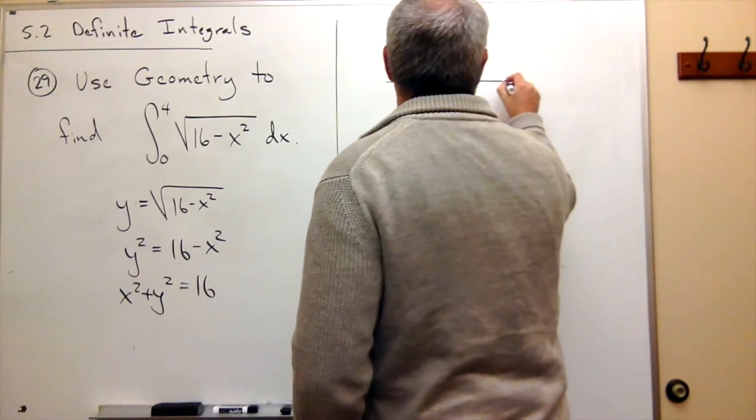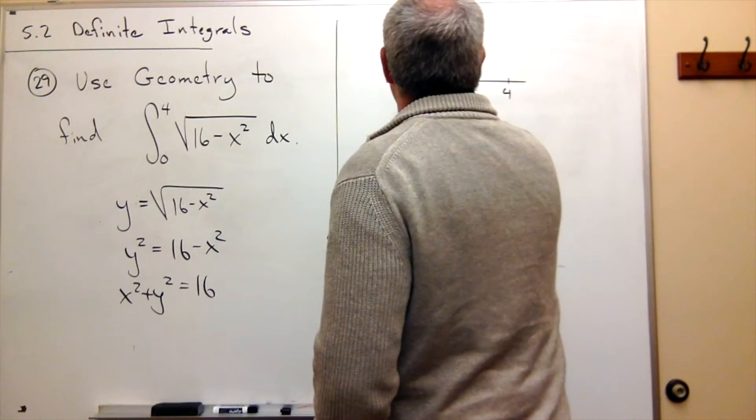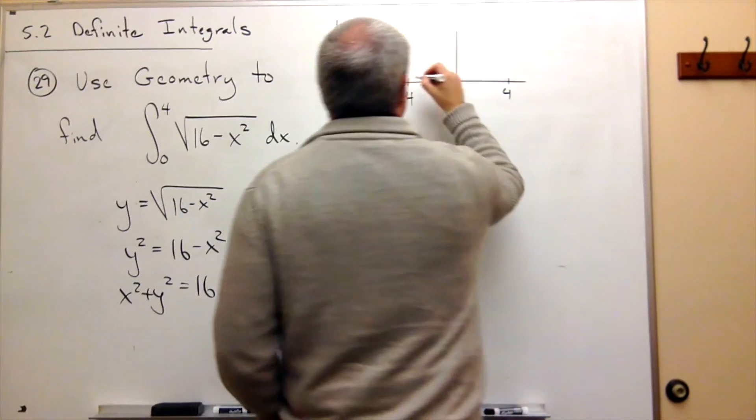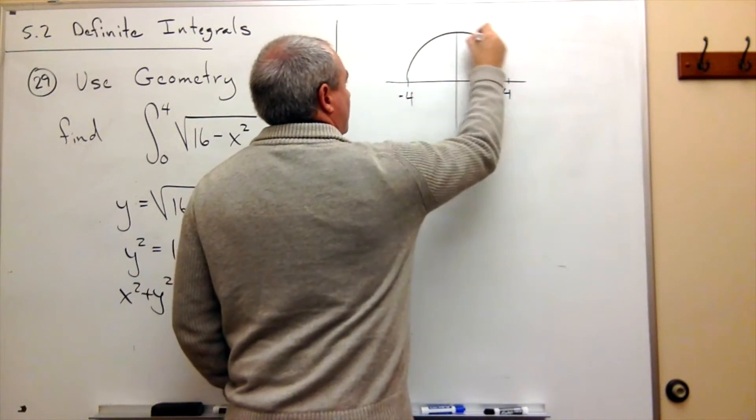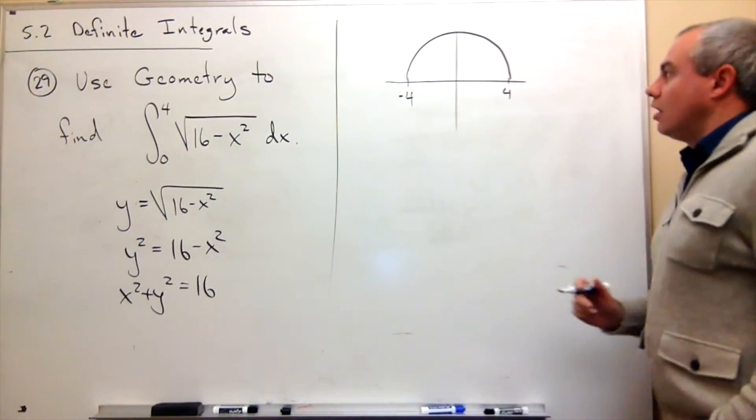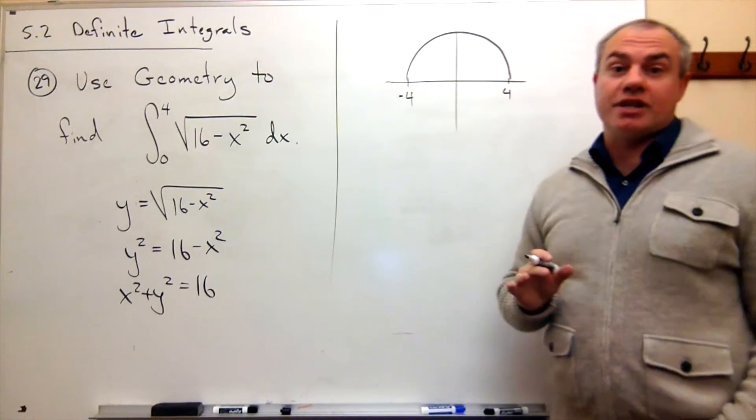And its radius is 4. So here's 4, back here is minus 4, and we're talking about this nice little semicircle. So this is the function we're dealing with.